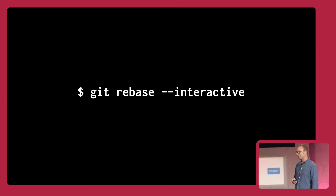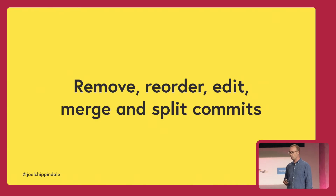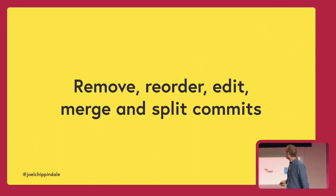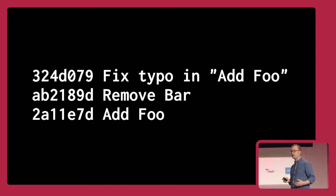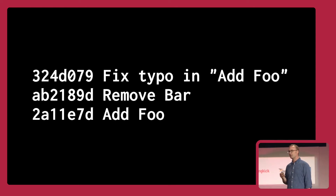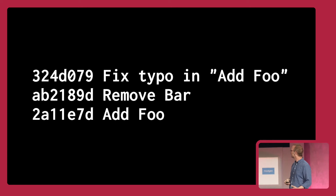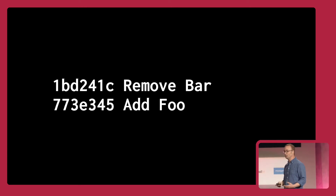There's a tool for this: Git Rebase Interactive. This allows you to remove, reorder, edit, merge, and split commits. So essentially with this tool, your development branches are infinitely malleable. To give you a quick example: imagine I've added foo, made a commit, removed bar, made a commit, and then I've spotted a typo in that first commit. So I make a new commit to fix the typo. That's just noise for other people — no one cares about the fact that I didn't get the first commit right. You can use Git Rebase Interactive to merge the first and third commits and tell a much simpler story about what you were trying to do.